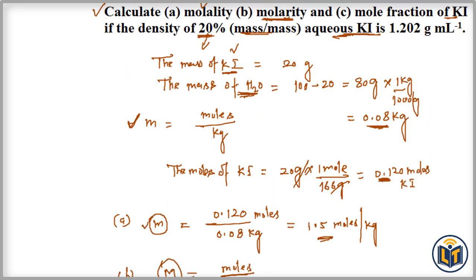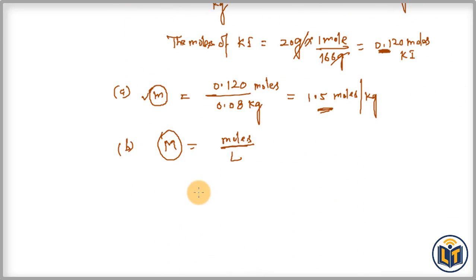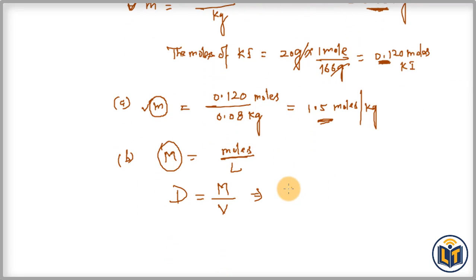We can calculate the volume because the density is given as 1.202 g/mL. The mass of solution is 100 grams — solvent is 80 g, solute is 20 g. Applying the density formula: density equals mass divided by volume, so 1.202 g/mL equals 100 grams divided by volume.